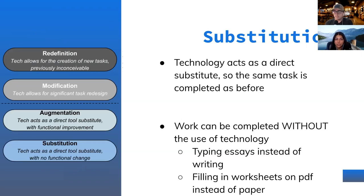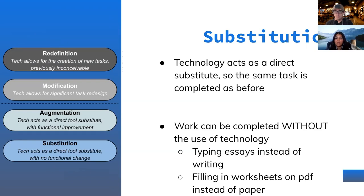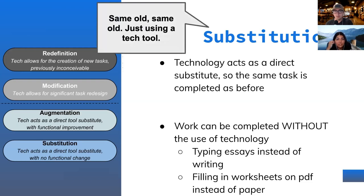At the lowest rung — substitution — technology acts as a direct substitute. You're doing the same task as before; the work can be completed without technology. Typing essays instead of writing them, or filling in a PDF worksheet instead of a paper one — it's the exact same task. Students aren't doing any creative thinking, and there's no extra rigor created by integrating that technology.